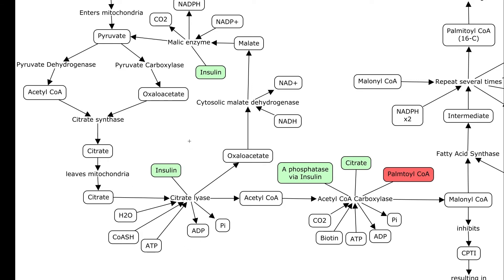Citrate lyase is an enzyme that is induced or stimulated — the green box means that. Insulin is high because blood glucose is high because you've just eaten a meal, so you want to build fatty acids, not break them down. Citrate lyase is going to take your citrate, add water, a CoA-SH, and an ATP, and kick off a phosphate and ADP. That gives us acetyl-CoA and oxaloacetate.